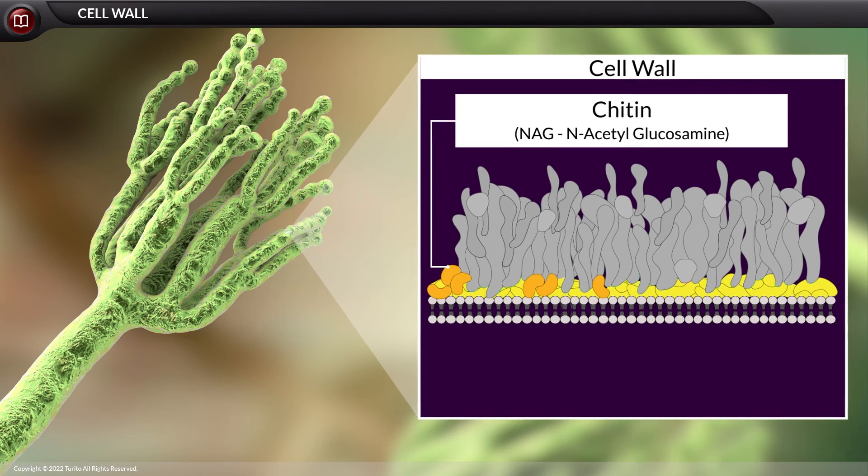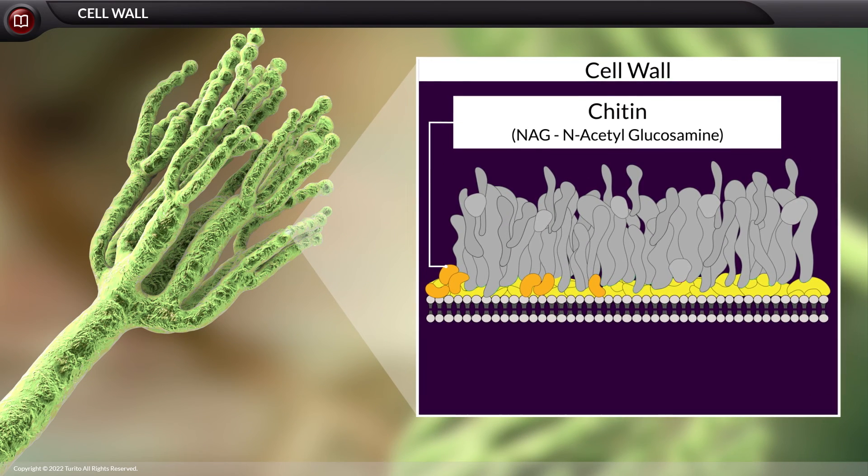Next, in fungi, the cell wall is made up of chitin, which is a polymer of NAG.